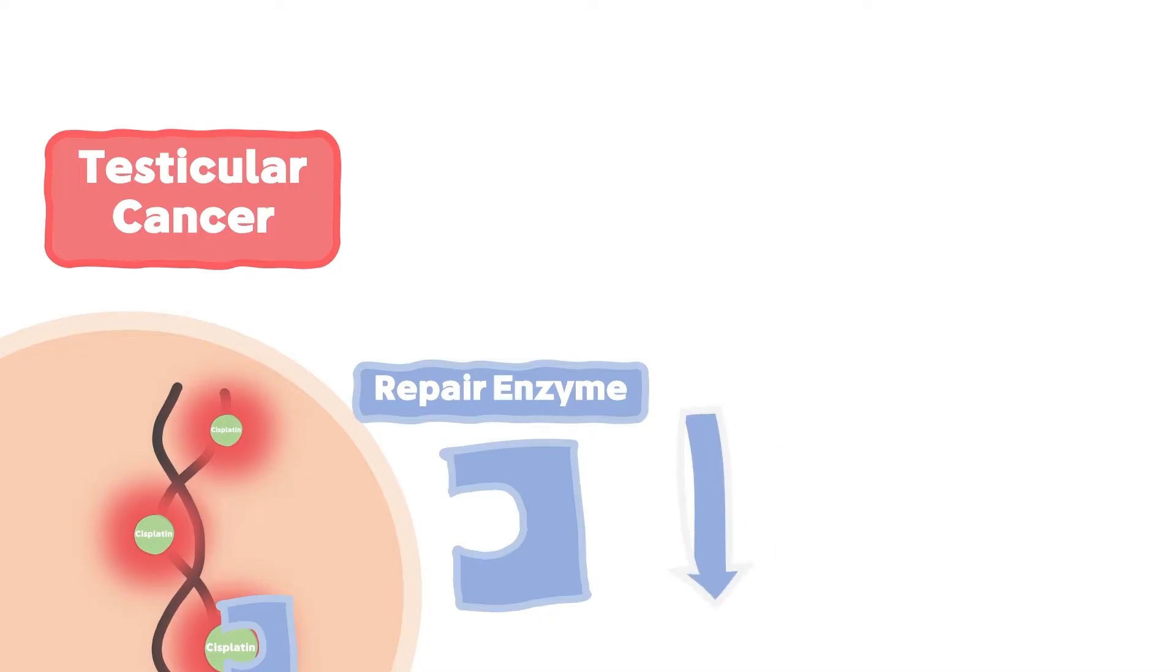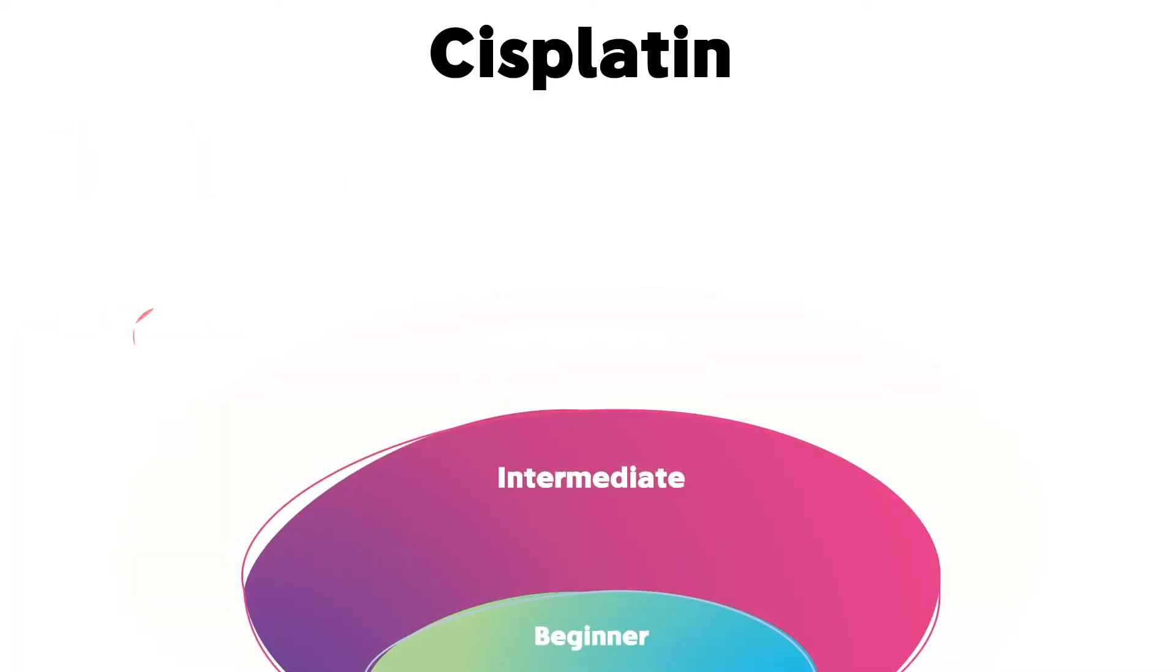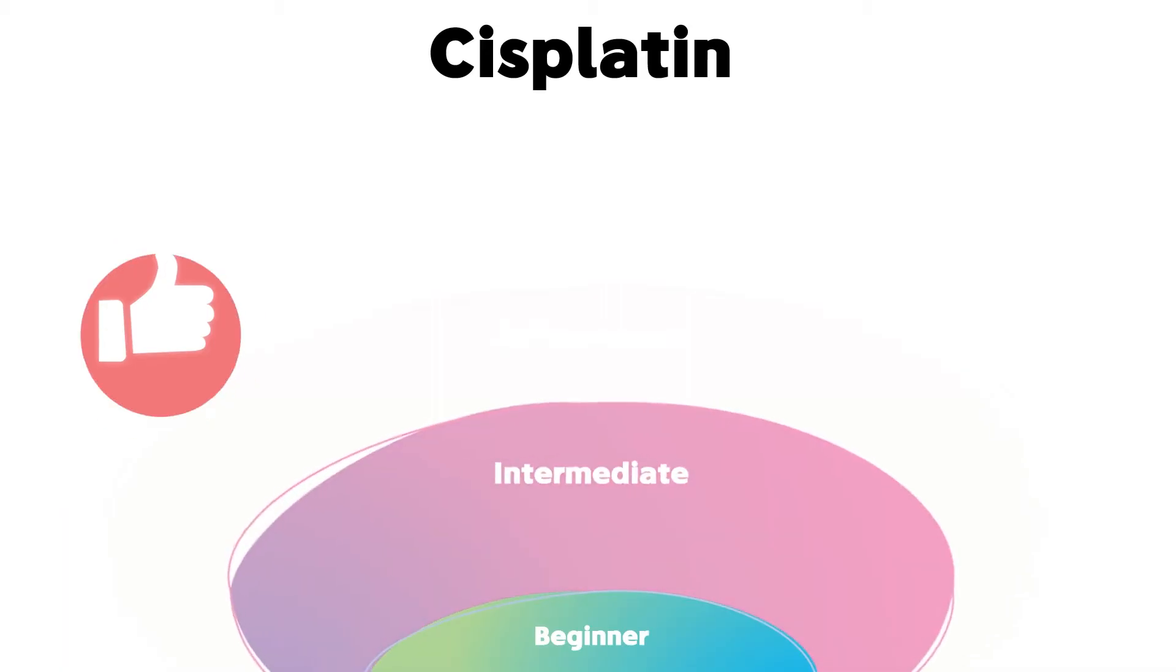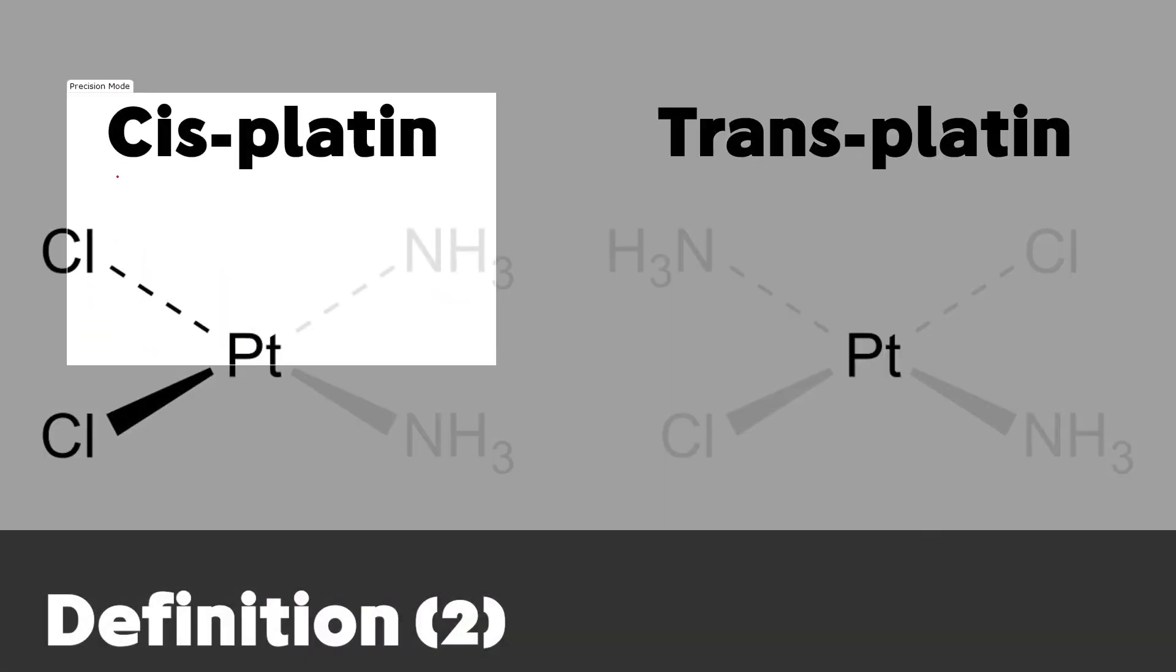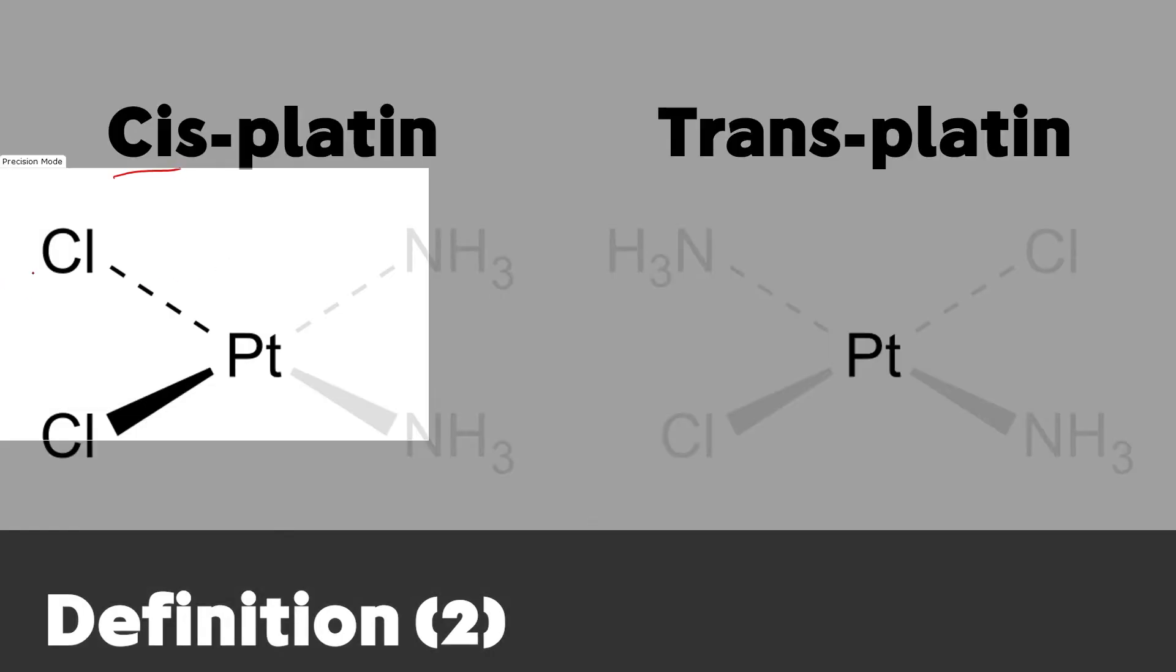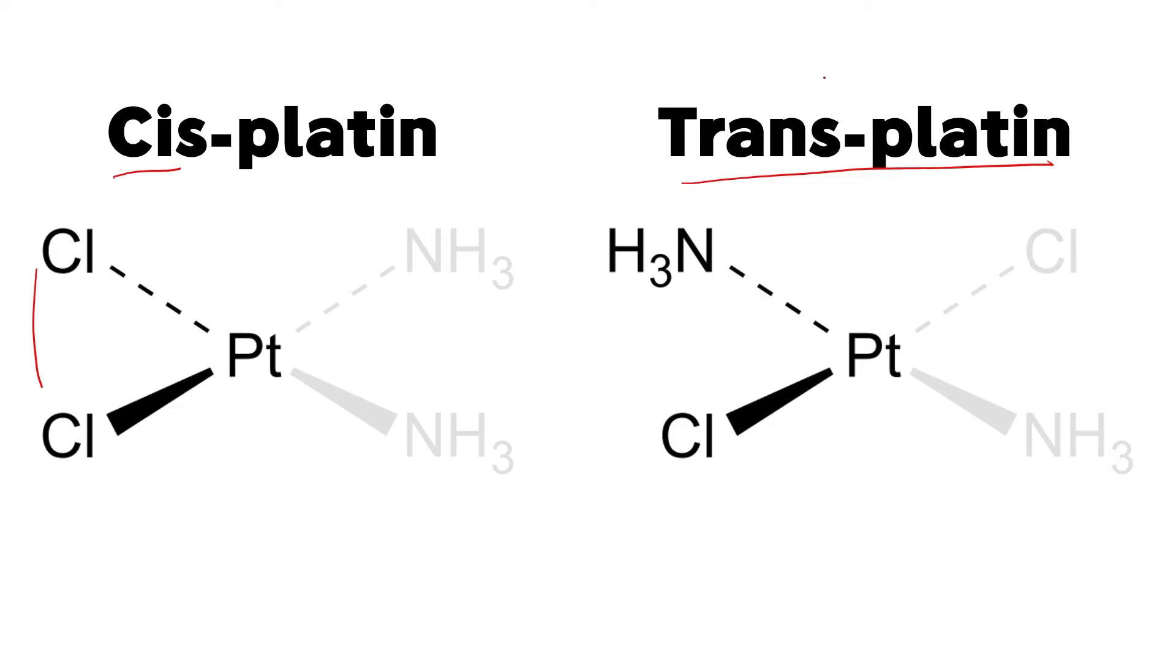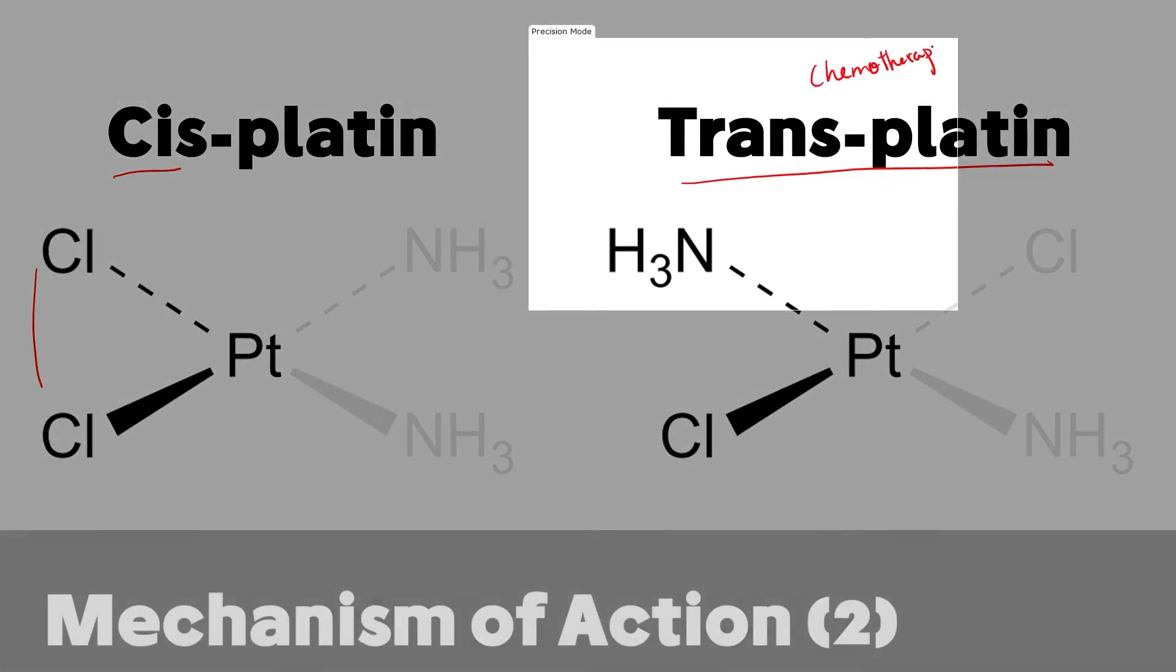If you are entering the second phase, please press the like button. So what is the meaning of cis in cisplatin? Cis means that the two chloro groups are on the same side, unlike trans-platin which has two chloro groups on opposite sides. For your knowledge, trans-platin is not used as a chemotherapy.